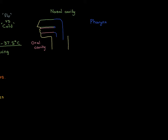The pharynx can be split into three separate sections. The portion just behind the nasal cavity is the nasopharynx. The portion just behind the oral cavity is the oropharynx. The bottom portion is the laryngopharynx, because the larynx comes off there. I'm now going to draw the larynx - since it has incredibly complicated anatomy, I'll just draw a box to represent it.